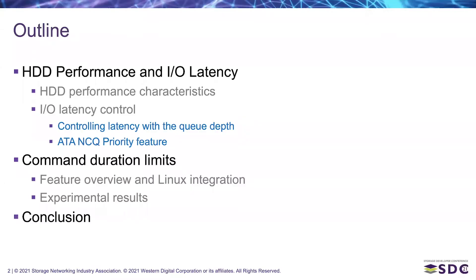The outline of this presentation is: we'll first go through some typical hard disk performance characteristics regarding performance and IO latency, and how users of hard drives can control this IO latency using two different methods — based on QDepth and using the ATA NCQ priority feature. We'll then move on to presenting details about the new command duration limits feature and its integration within the Linux kernel, present some experimental results, and conclude this presentation.